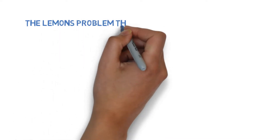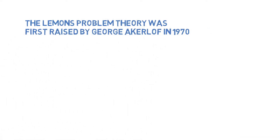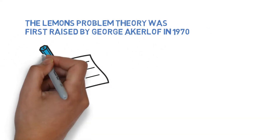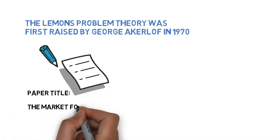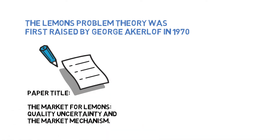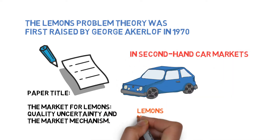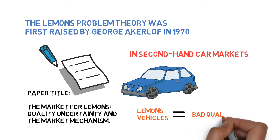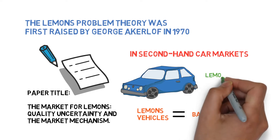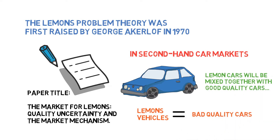The lemons problem theory was first raised by George Akerlof in 1970 in his research paper titled 'The Market for Lemons: Quality Uncertainty and the Market Mechanism.' In second-hand car markets, lemons vehicles usually refer to those cars having poor performance or bad quality because of a variety of defects and issues.